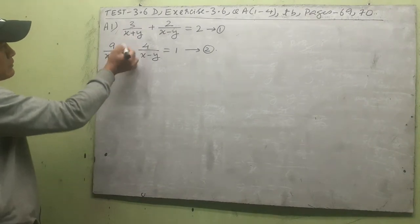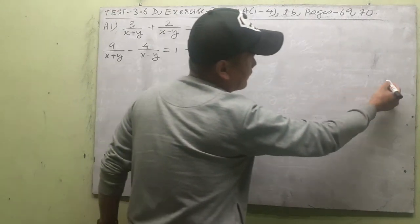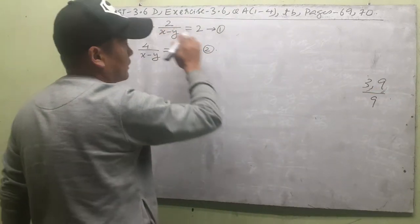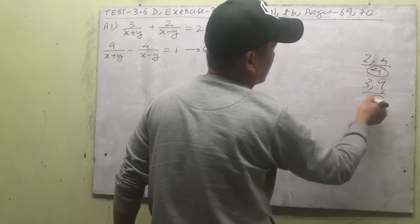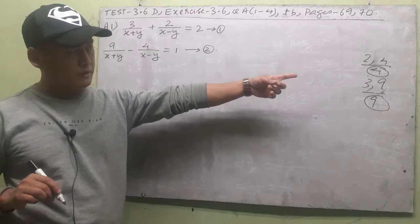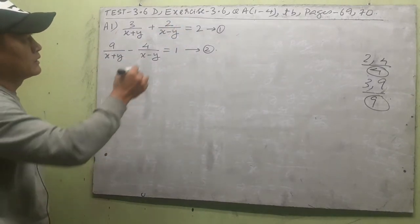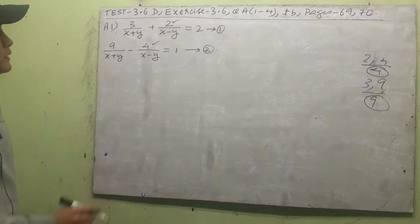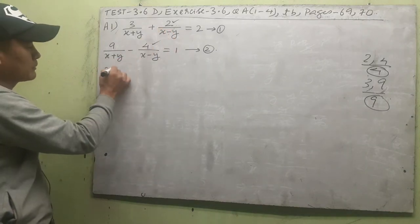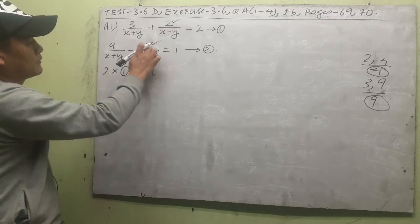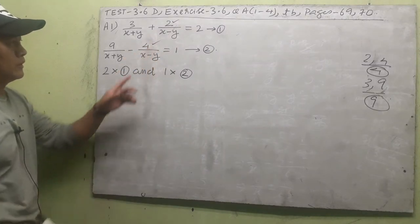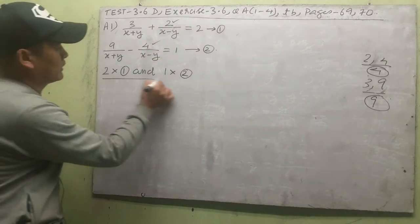Looking at the coefficients of 1/(x+y): they are 3 and 9, so the LCM is 9. For 1/(x−y), the coefficients are 2 and 4, so the LCM is 4. Since LCM 4 is smaller it will be easier to work with, so we'll use the coefficients of 1/(x−y) for elimination. We'll multiply 2 to equation 1 and 1 to equation 2.